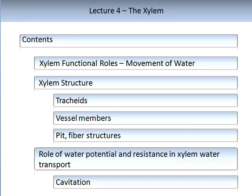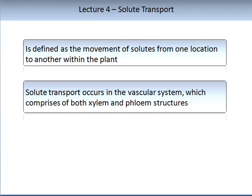There are issues with water moving under tension, which lead to a biological phenomenon called cavitation. Once a compound has entered through the root system, it has to be moved to its final location — this is called solute transport, defined as the movement of solutes from one location to another within the plant. Solute transport occurs in the vascular system, which comprises two structures: the xylem and the phloem.